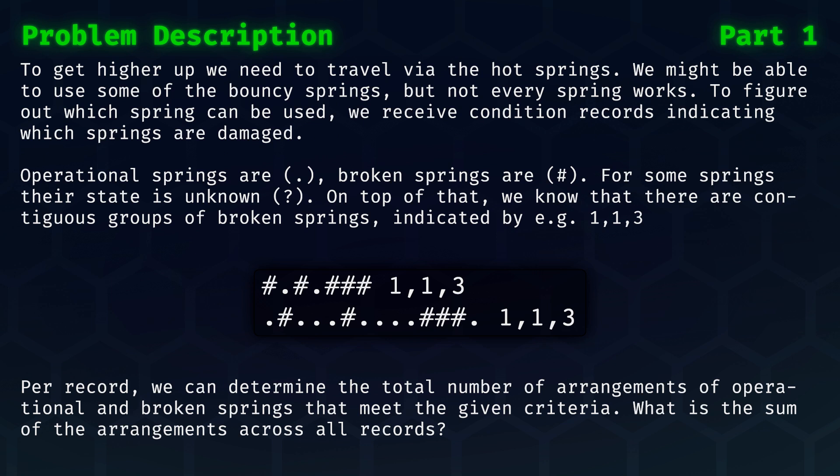Operational springs are indicated with a dot, while broken springs are indicated with a hash. For some springs, their state is unknown, as shown with a question mark. On top of that, we know that there are contiguous groups of broken springs, indicated by, for instance, 1, 1, 3.